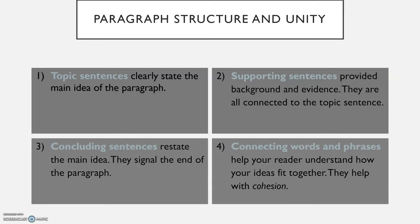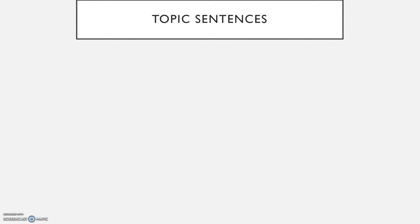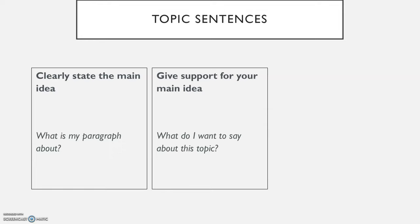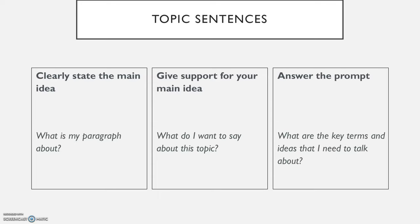We will talk more about supporting sentences, concluding sentences, and connecting words and phrases in other lessons. But for today, let's zoom in and talk more about topic sentences. There are three main things to think about when writing a topic sentence. One, it should clearly state the main idea — what's my paragraph about? Two, it should give support for your main idea — what do I want to say about this topic? And three, it should answer the prompt in a writing class — what are the key terms and ideas that I need to talk about for this writing assignment?